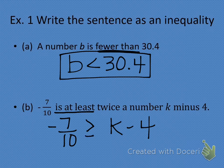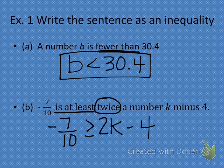Then it says twice a number. When you see the word 'twice,' what operation should you think of? Multiplication. And what number are you multiplying by? Two. This says twice a number K, so the two goes right in front of the K, and then minus four goes right after. So the inequality reads: negative seven tenths is greater than or equal to 2K minus four. Great job.